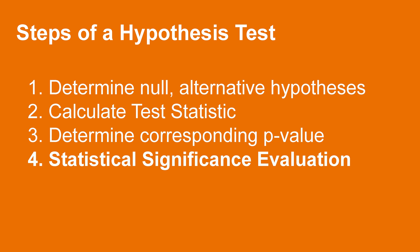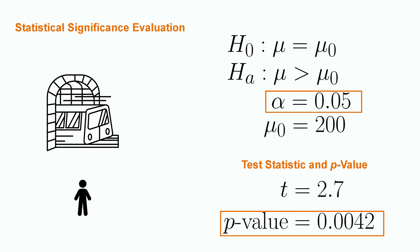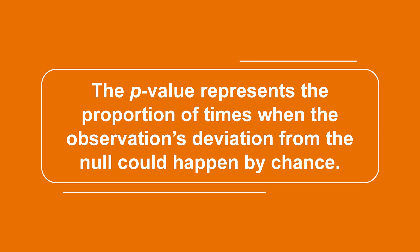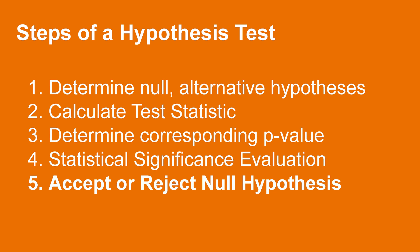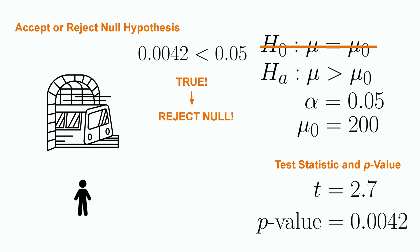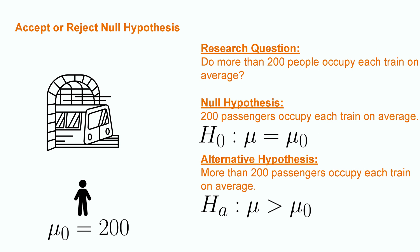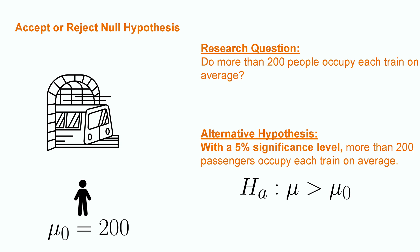This sets us up for step 4, where we evaluate the statistical significance of our observations. We must look explicitly at the significance level alpha and the p-value. Recall that the p-value represents the proportion of times when the observation's deviation from the null could happen by chance. If the p-value is smaller than the significance threshold, then we can say with a level of certainty that the observation was not due to random chance. So we just have to ask the question of whether p is less than alpha. Plugging in both values, we ask whether 0.0042 is less than 0.05. This is true, leading to step 5, where we either accept or reject our null hypothesis. Since our threshold evaluation was true, this means that we can reject the null. In terms of our original framing, this means the null hypothesis is untrue, and the sample data supports the alternative hypothesis. In particular, we can say with a 5% significance level that more than 200 passengers occupy each train on average, meaning we should probably run more trains, especially at rush hour.